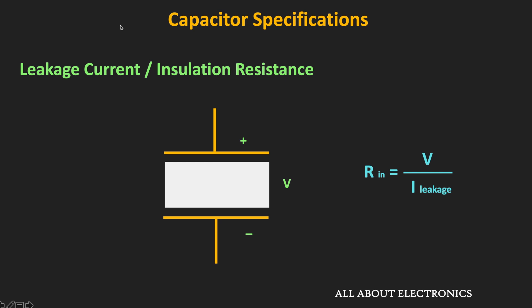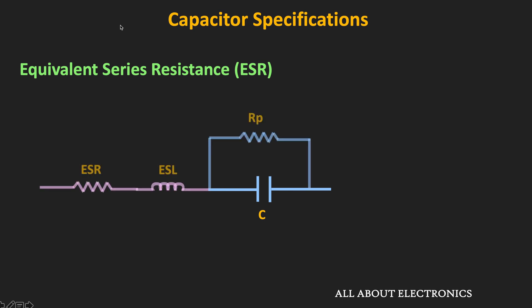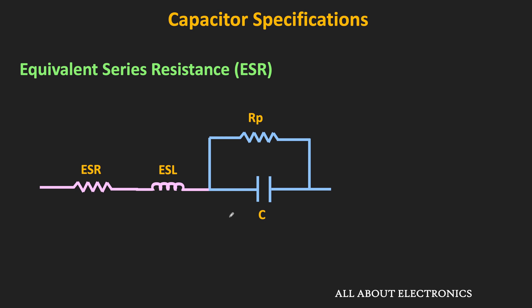Depending on the type of application, one should also look for this parameter. The next very important specification is the effective series resistance, or ESR. Normally, a capacitor is represented by its nominal capacitance value, but it also has some finite series resistance as well as series inductance. This series resistance is known as the equivalent series resistance (ESR), and the series inductance is known as the equivalent series inductance (ESL). Apart from these, the capacitor also has some parallel resistance, which is actually the insulation resistance indicating the leakage current. This is the equivalent circuit of the capacitor, and the ESR is linked with the AC losses.